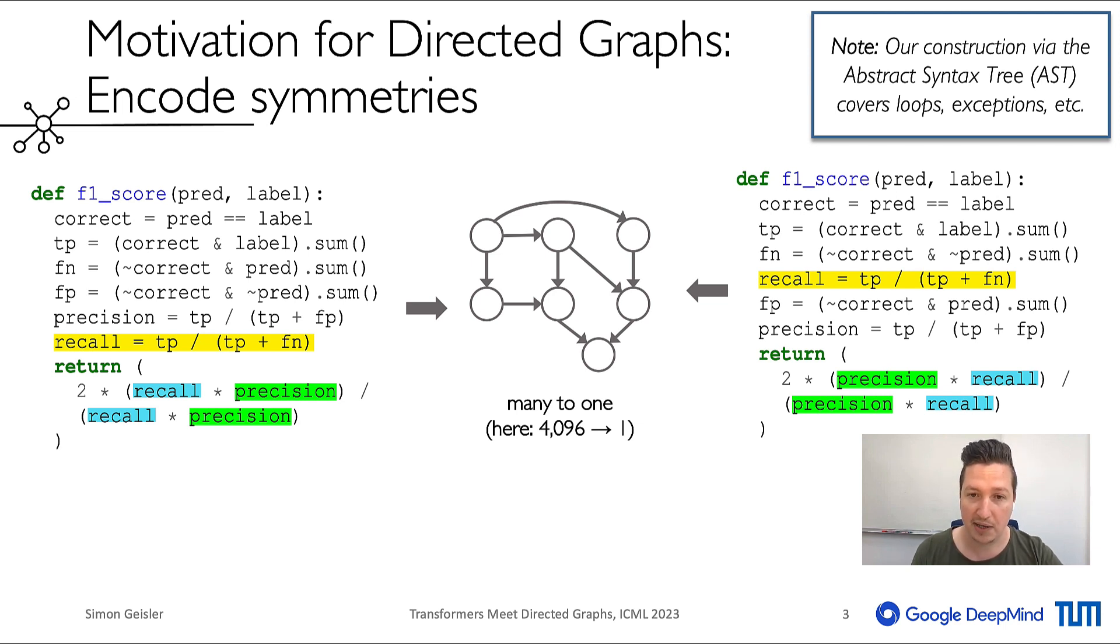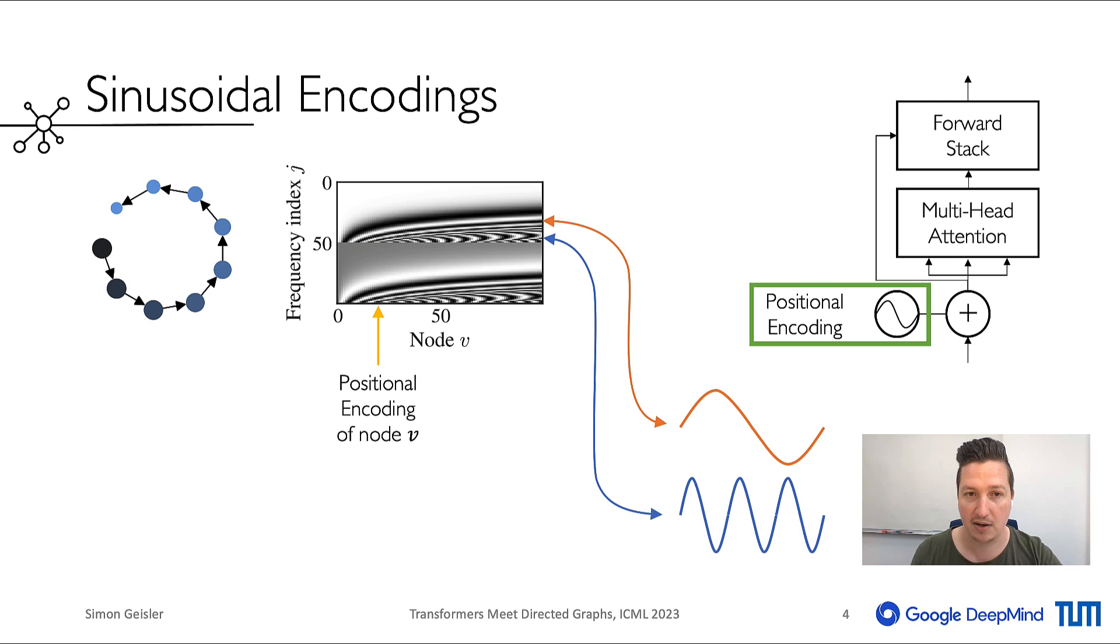Considering only these two factors, we find that there are 4,096 ways to write these simple functions. Importantly, we incorporate these symmetries since we map all 4,096 options to a single directed graph.